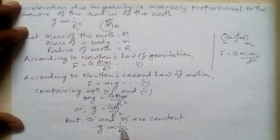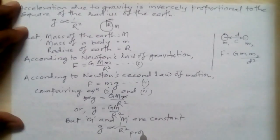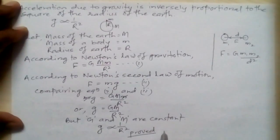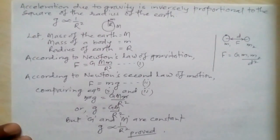Therefore, g is proportional to 1/r², meaning g is inversely proportional to the square of the radius of the earth. This is what is proved: acceleration due to gravity is inversely proportional to the square of the radius of the earth.